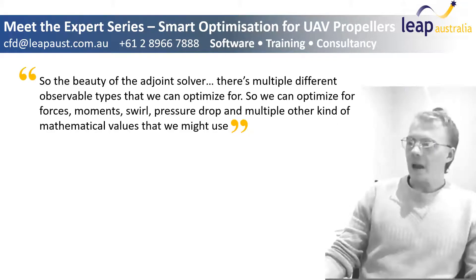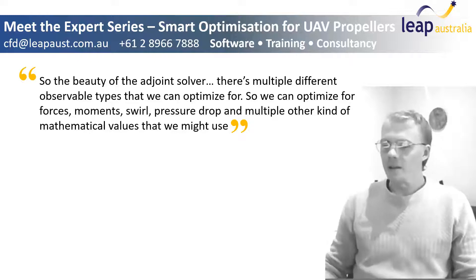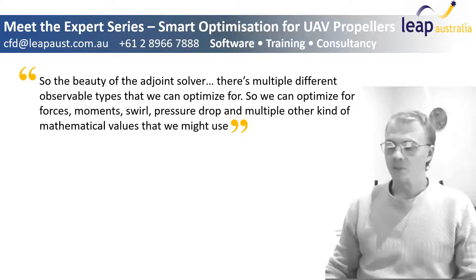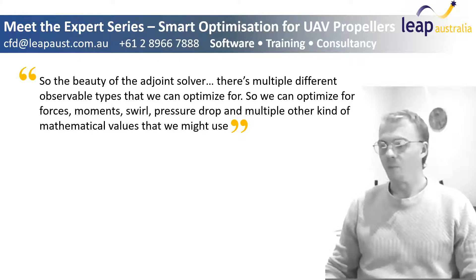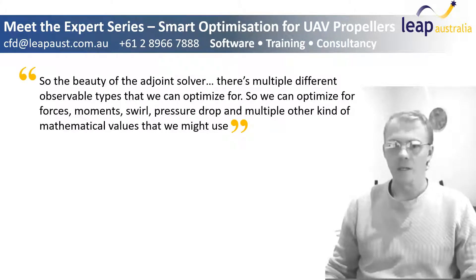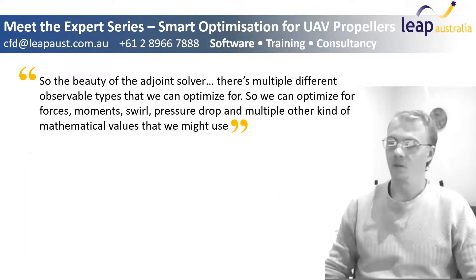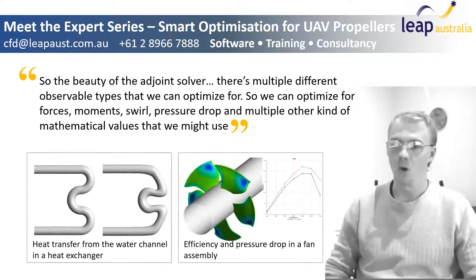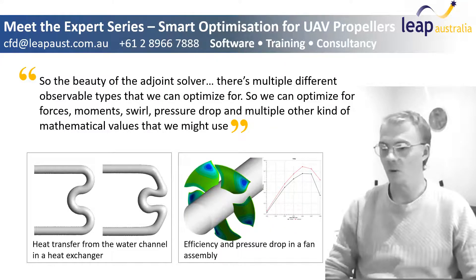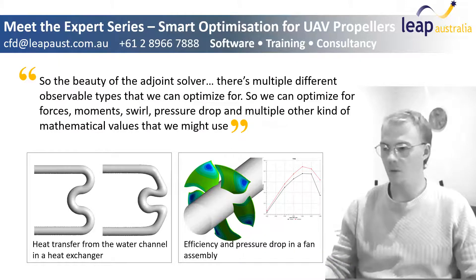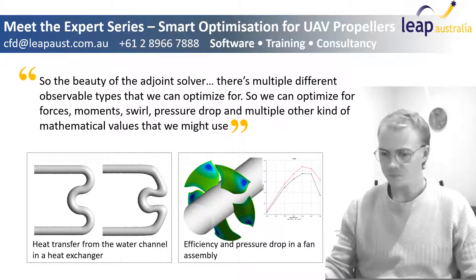The beauty of the adjoint solver is that there are multiple different observable types we can optimize for. We can optimize forces, moments, swirl, pressure drop, and multiple other mathematical values that we might want to use.